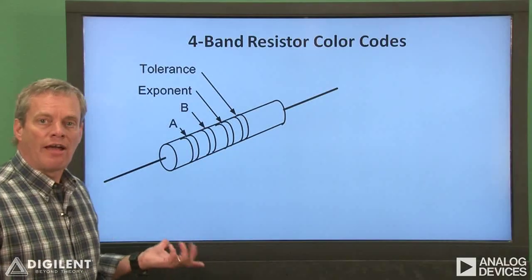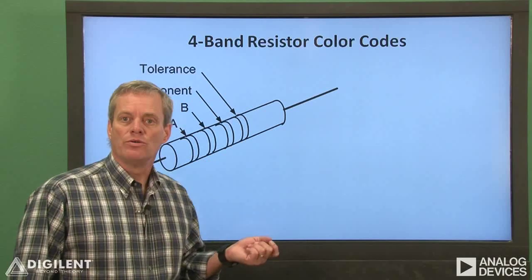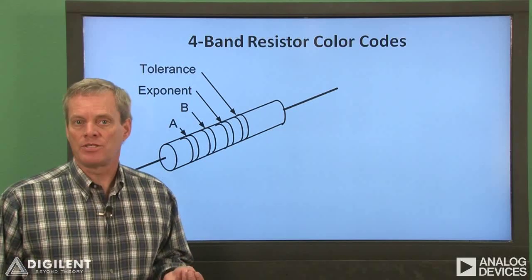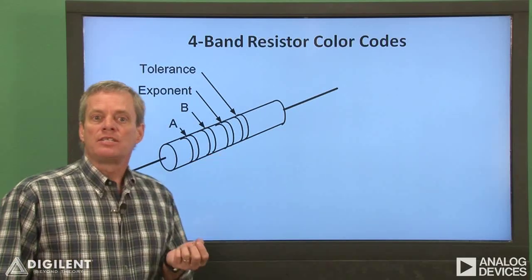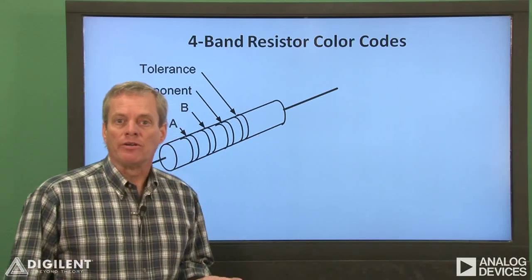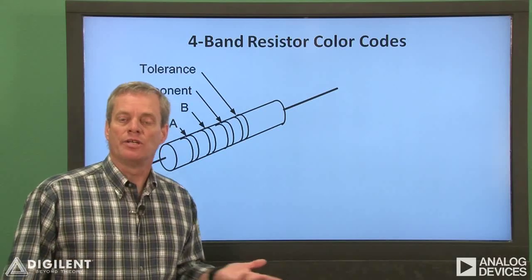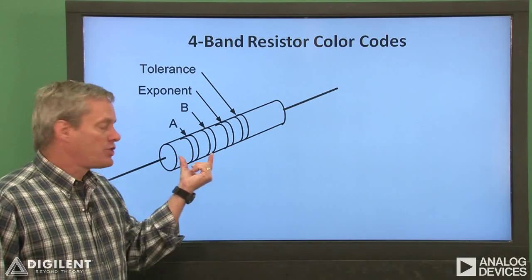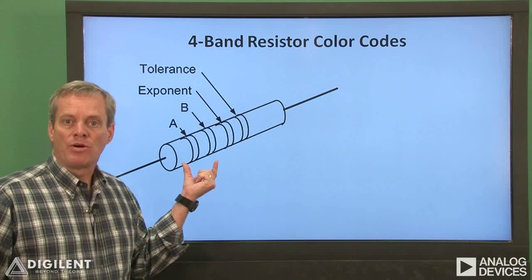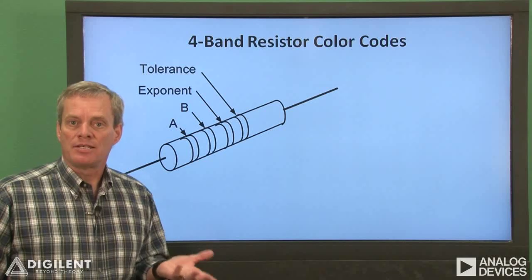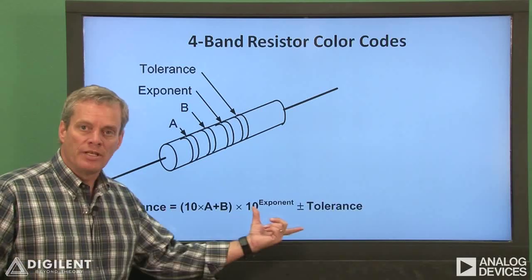Now let's look at how to read the color code on the resistors. The resistors in our analog parts kit all have a four-band color code. This means that the resistance value and its tolerance are coded in four colored bands on the resistor. The first three bands consist of a resistance value in exponential notation. The first two bands provide the mantissa of the number, and the third band provides the exponent, or power of ten, by which the mantissa is multiplied.